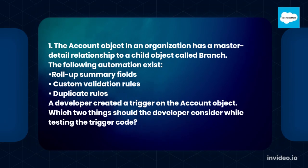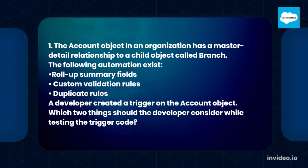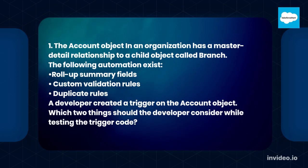Question 1: The account object in an organization has a master-detail relationship to a child object called Branch. The following automation exist: roll-up summary fields, custom validation rules, and duplicate rules. A developer created a trigger on the account object. Which two things should the developer consider while testing the trigger code?